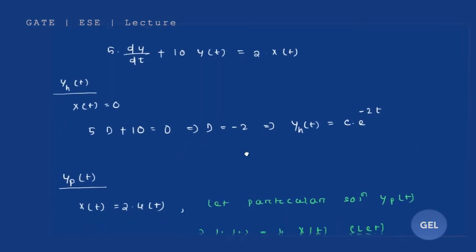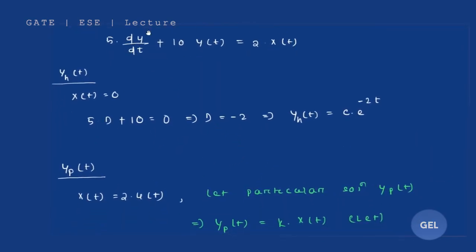To find the homogeneous part, we make the input zero. You can write the equation as 5·d + 10 = 0, which gives d = -2. So the homogeneous solution is y_h(t) = C · e^(-2t).